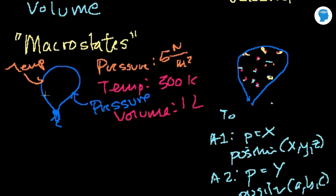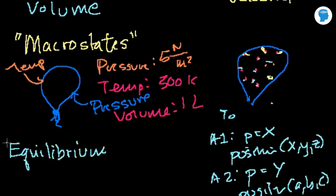When a system is in thermodynamic equilibrium, the macrostates are defined — they're not changing. From the chemistry point of view, equilibrium means the forward reaction equals the reverse reaction. For macrostates, thermodynamic equilibrium essentially says the macrostate is stable. If this balloon is in equilibrium, at time 1 its pressure, temperature, and volume will be these values, and a second later they'll still be these values. In order for macrostates to be well-defined, you have to be in equilibrium.